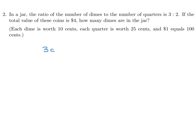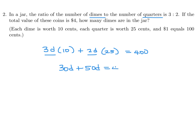So 3 to 2 is the ratio, so I'll just say 3D for the number of dimes, and each dime is worth 10 cents. And then 2D for the number of quarters, and each quarter is worth 25 cents. And that total, they're saying, is $4 — I'm just going to put 400 to represent the number of cents. So this will be 30D plus 50D equals 400.